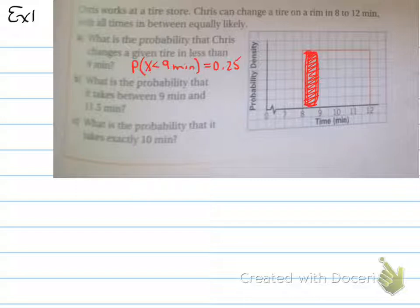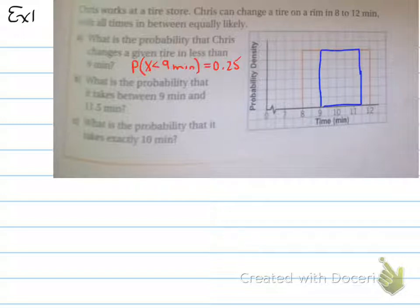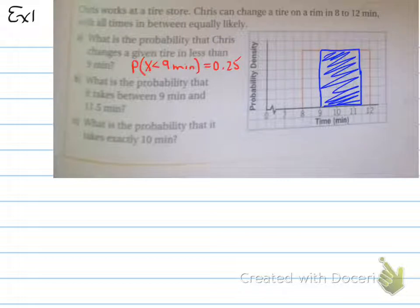Now, the next part is, we're going to erase this red part and calculate part B. Part B says, what is the probability that it takes between 9 minutes and 11 and a half minutes? Well, that means that we've got to cover this section. 9 to 11 and a half covers this section of the graph. And if you were to count it out, you would have seen that it covered 5 times 6, which is 30, over the 48 that we had earlier.